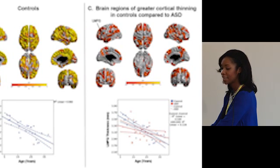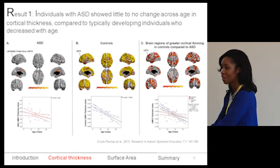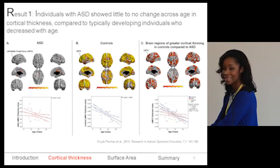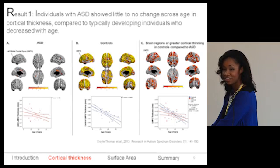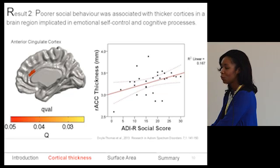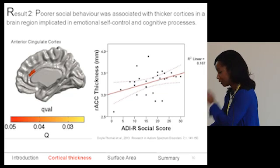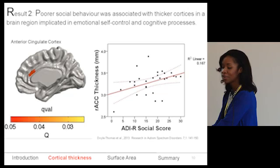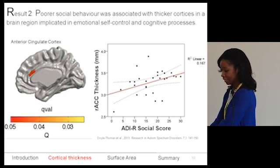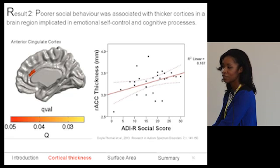The colors on the brain images show regions of significant developmental change across time. Red shows regions where ASD individuals have significantly thicker cortices compared to controls. Typical development tells us cortical thickness should decrease with time — the cortex should be getting thinner — but in ASD we see less change, and this is significantly different between groups. Being interested in social cognition, we drew ROIs in specific regions implicated in social behavior and correlated thickness with social scores on the Autism Diagnostic Interview Revised, a clinical diagnostic measure. We found that greater cortical thickness was associated with poorer scores.